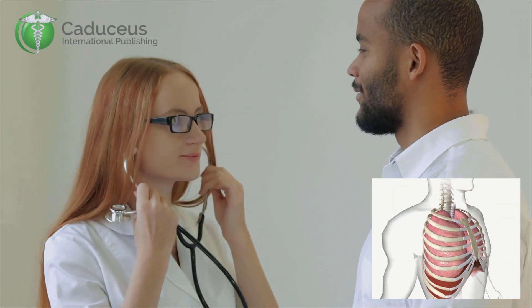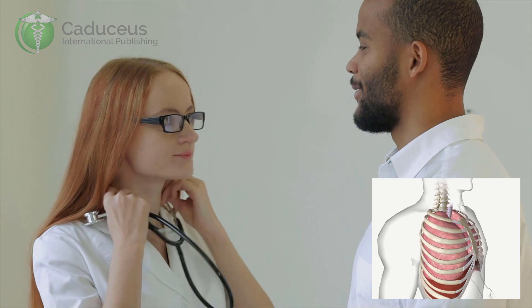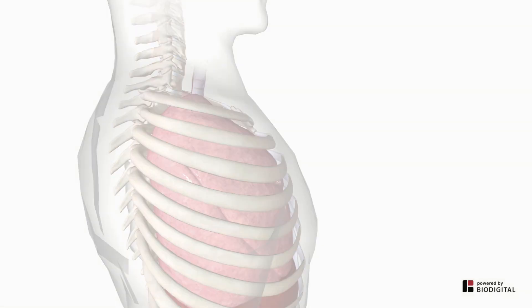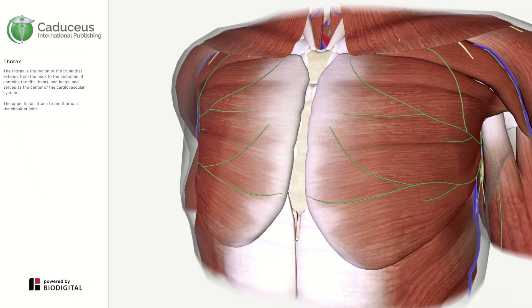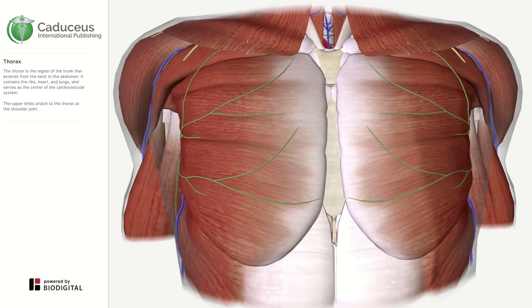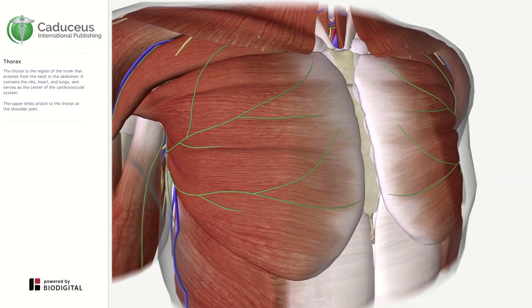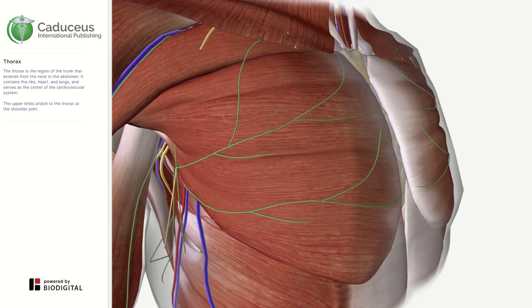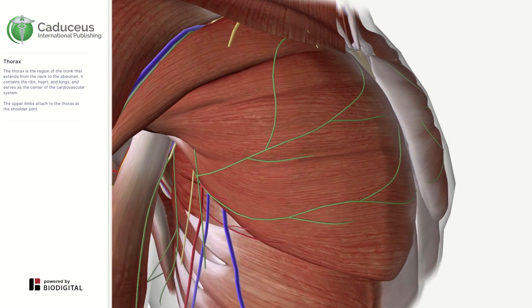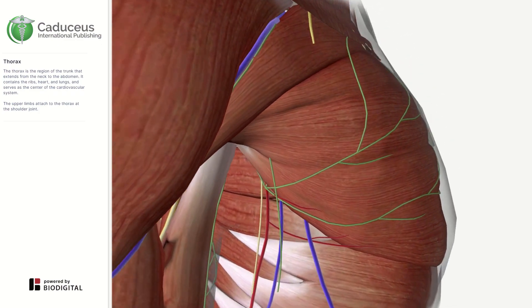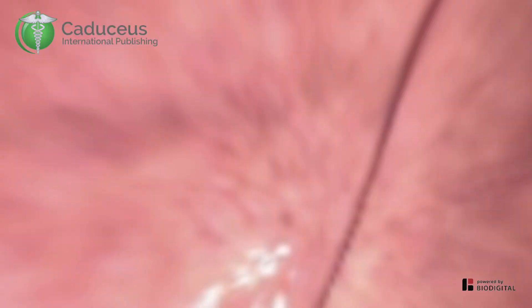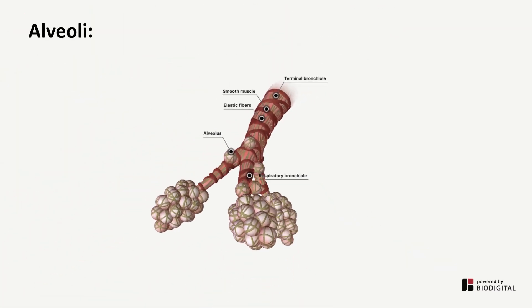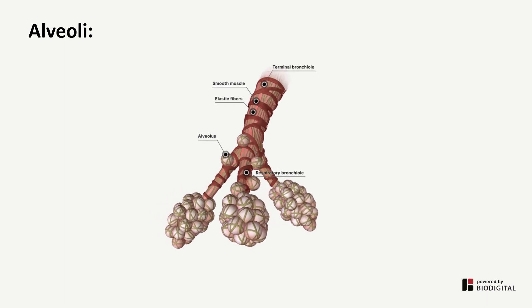Normal respiratory movement is referred to as breathing. Although breathing is involuntary and rhythmic, it can be controlled to an extent by skeletal muscles of the thorax. All vertebrates with lungs undergo the breathing cycle of inspiration and exhalation through a highly branched system of air passages. These airways lead from the nose to the alveoli, effectively linking these components of the respiratory system.